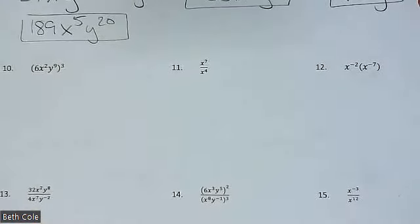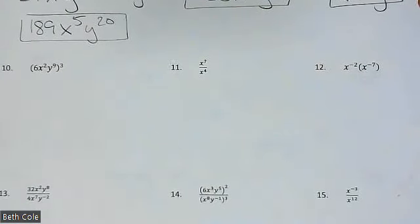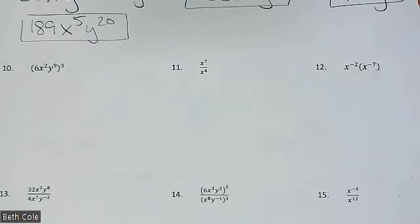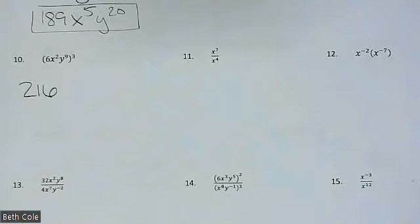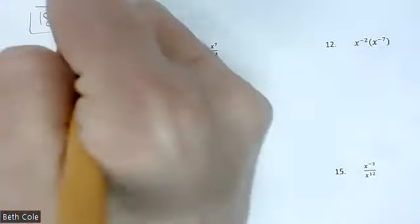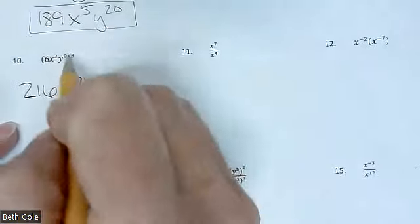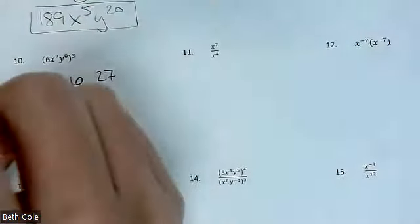Here, we're going to take all of this to the 3rd. I need to do 6 to the 3rd power. Let me come over here to my calculator and type in 6 to the 3rd. Why does it always do that to me? There we go. 6 to the 3rd? 216. I just typed it in. There it is. Power to a power means you're going to multiply. So for x, that would be 2 times 3 is 6. For y, 9 times 3 is 27.